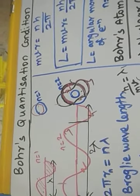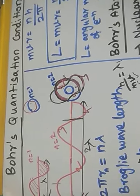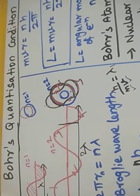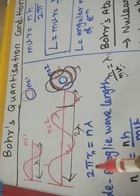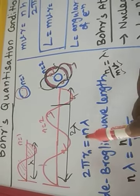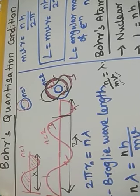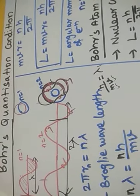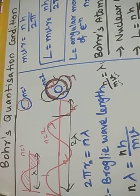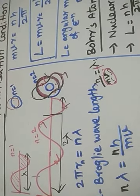Quantization means electrons are present in discrete energy levels — step by step, not continuous. He stated that the circumference of an orbit equals n lambda: if n=1 it is the first orbit, n=2 the second orbit, and so on. For example, four lambda means that electron must be revolving in the fourth orbit, because its wavelength is equivalent to the circumference of that orbit.